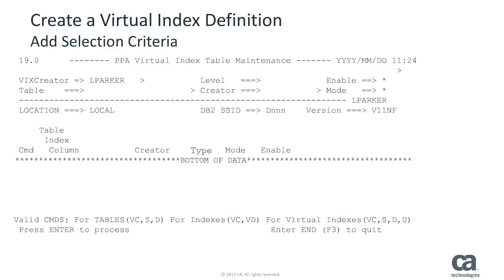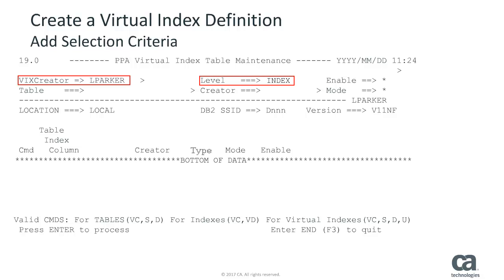Lynn arrives at the Virtual Index Table Maintenance panel. This panel includes data from the DB2 catalog along with data from Lynn's DSN Virtual Indexes table. Lynn begins creating the Virtual Index Definition by specifying her selection criteria in the header fields. The Virtual Index Creator field already displays Lynn's user ID, LParker. Lynn specifies a value of index in the Level field. In the Table field, she types in a mask of DEPART%. In the Creator field, Lynn types in NOR. Lynn leaves the asterisks in the remaining fields and presses Enter.